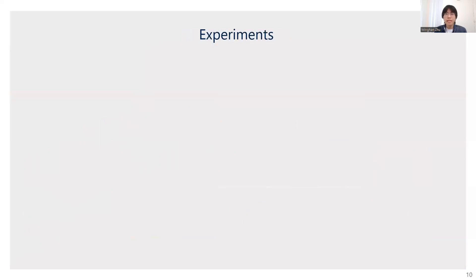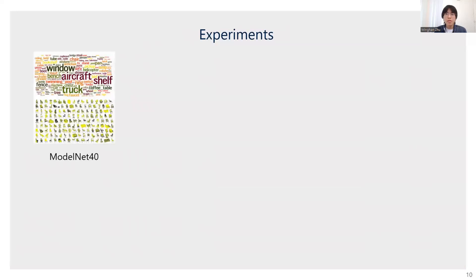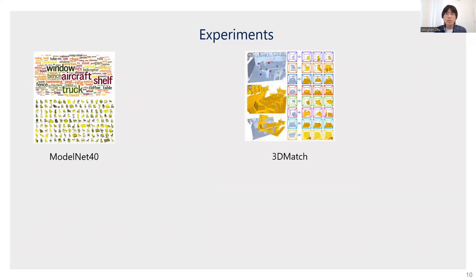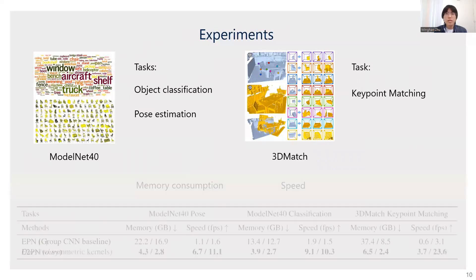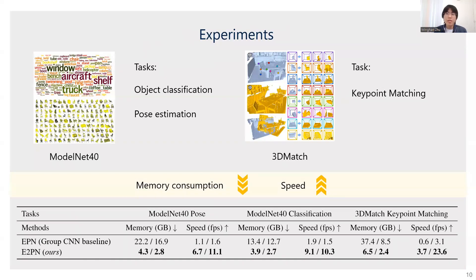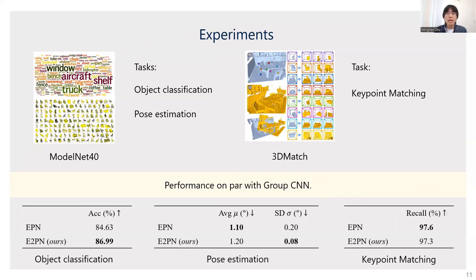We conduct experiments on two datasets: ModelNet40, which is composed of synthetic object models, and 3DMatch, a dataset of real-world indoor RGB-D scans. Three tasks are involved: object classification, pose estimation, and keypoint matching. In all three tasks, the memory consumption of our method is only a fraction of the existing group CNN baseline, and the frame rate is an order of magnitude higher for both training and inference. In the meantime, our method maintains the same level of performance in these tasks.